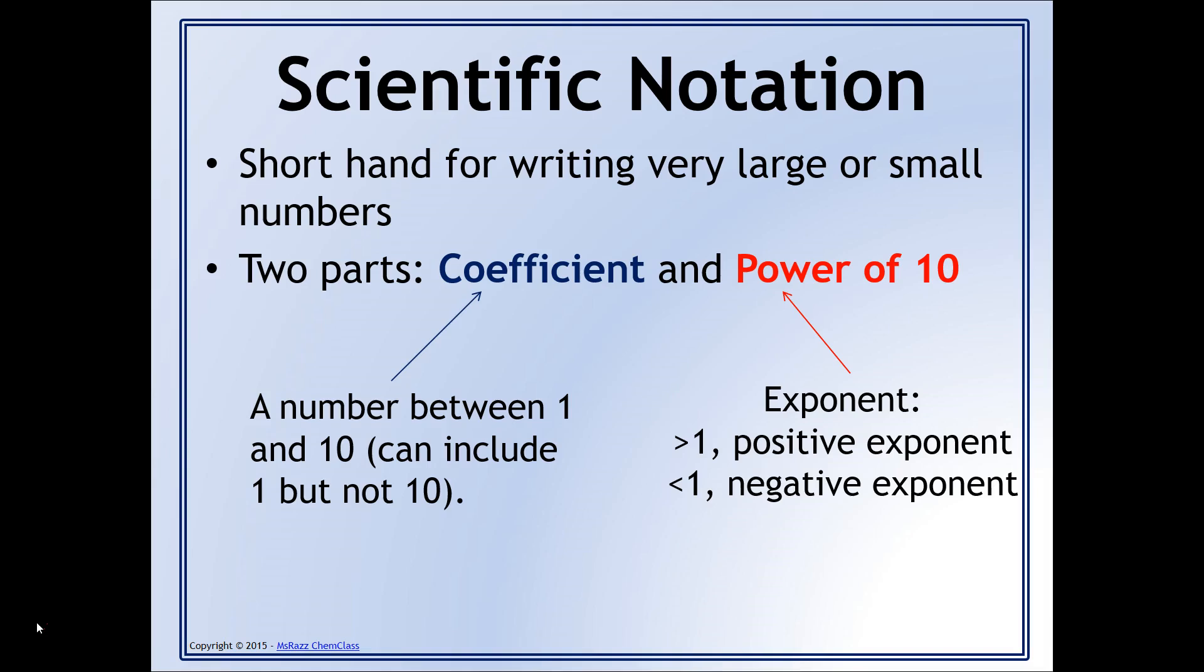The power of 10 is really just an exponent. And so if you have a coefficient that is going to be greater than 1, then you're going to have a positive exponent. If you have a number that is less than 1, then you're going to have a negative exponent. So what that really means, if it's greater than 1, you're going to have a fairly large number. If it's smaller than 1, you'll have a very small number.